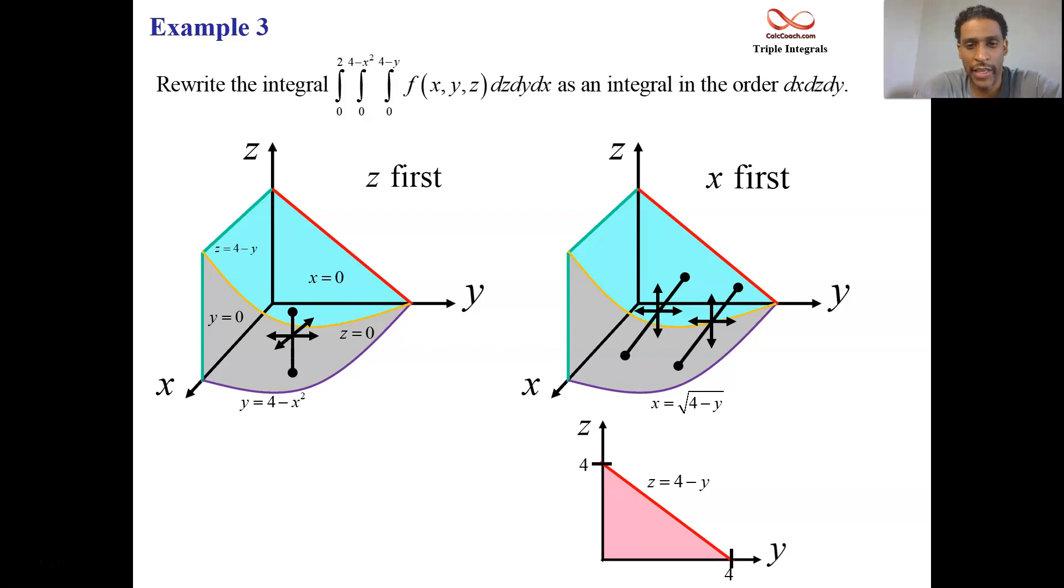And then we have our choice to do this as, we don't have a choice. They tell us to do this as z first. So dz dy would be a vertical slice moved horizontally from 0 to 4 in y and from 0 to 4 minus y in z. So there you have it.